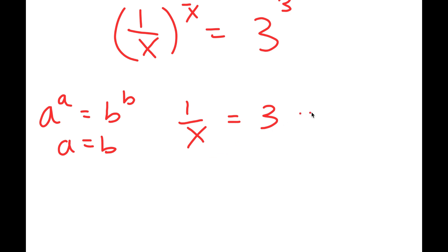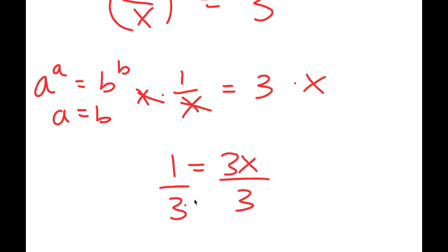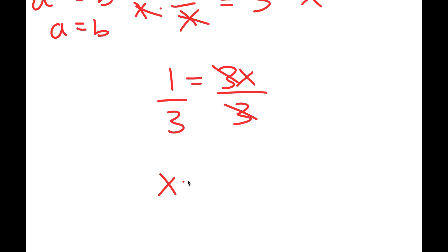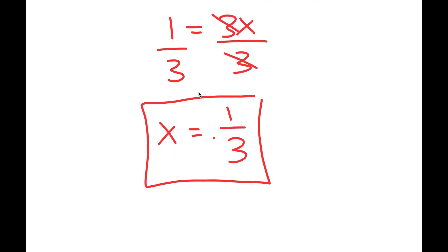Now, if I multiply both sides by x, these two cancel out, so I get one is equal to three x. And if I divide both sides by three, I get x is equal to one over three. So this is my solution.